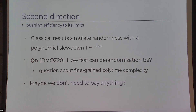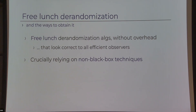Going back to the 70s: is it possible that randomness is so useless that you can simulate it without paying for it at all — just for free? The second direction I've been involved with is free-lunch theorems and de-randomization. You construct free-lunch de-randomizations — algorithms with no overhead whatsoever — that have some mistakes, but you will never notice, because no efficient observer can find a mistake. It's a lunch that looks free, and for all purposes it is free.